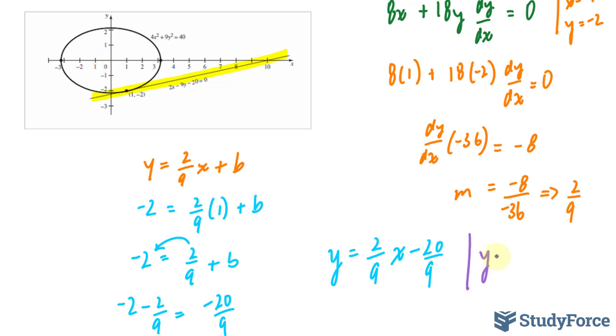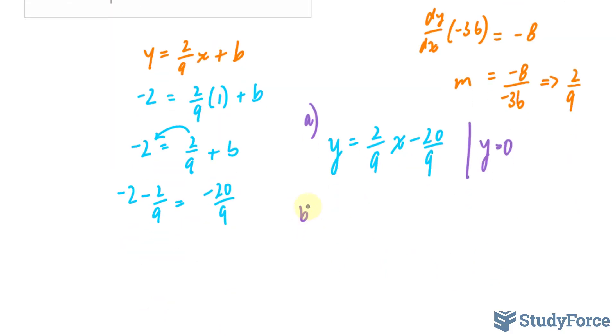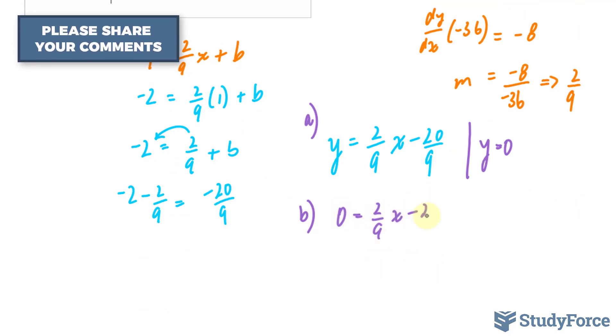So if I substitute y is equal to 0—and by the way, this is my answer for a, and this is my answer for b—I end up with 0 is equal to 2 over 9x minus 20 over 9.